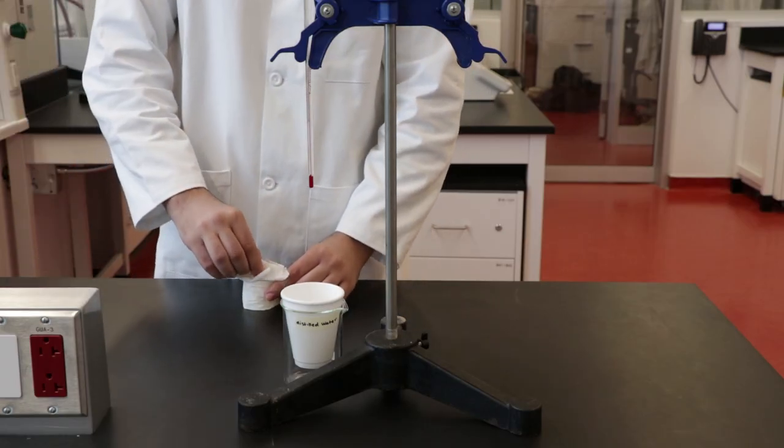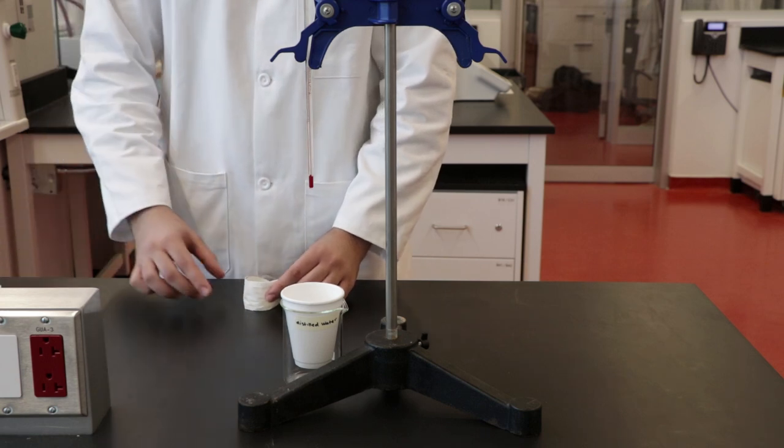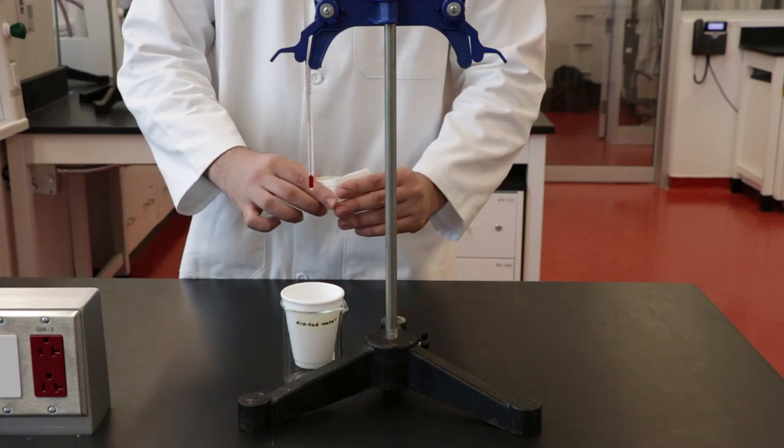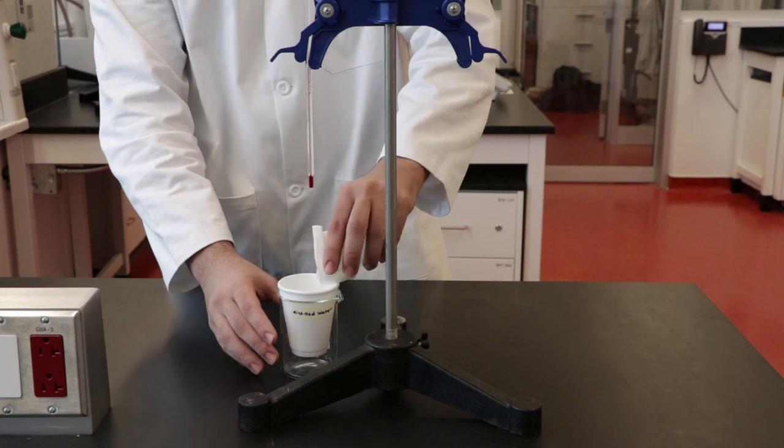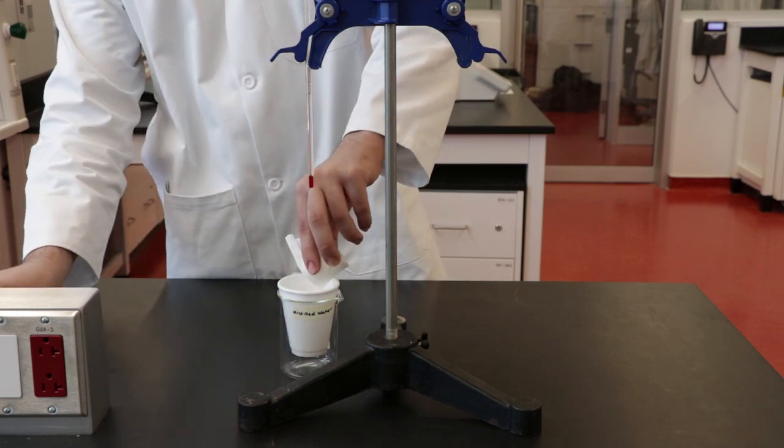At the five minute mark, pour the contents from the weighing bottle into the styrofoam cup and stir using a glass rod. Use kim wipes when handling the weighing bottle.